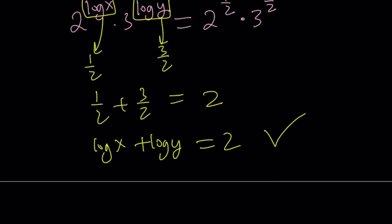So from here, we get the same thing, log X equals 1 half, which means X equals square root of 10, and Y equals 10 times the square root of 10.